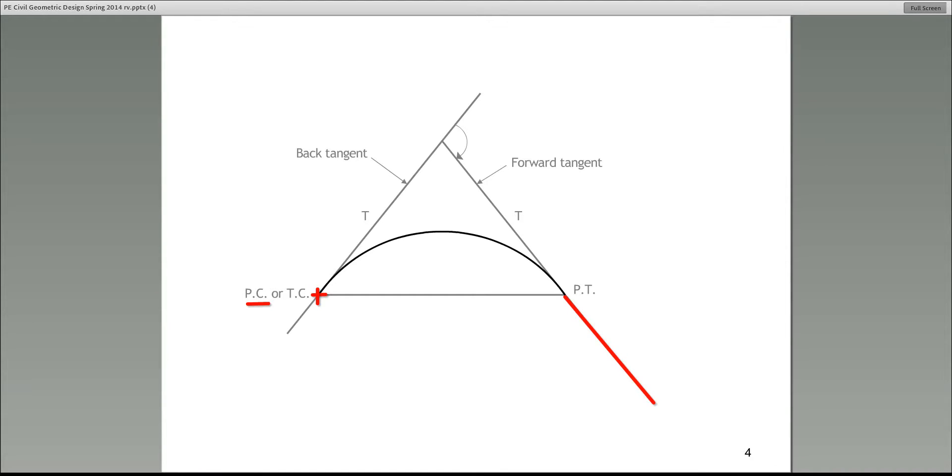Now, that same point is also referred to as TC. Who can tell me what TC stands for? TC stands for tangent to curve. So that is tangent to curve. And then there is a third way to represent that very same point. It is called BC. Who can tell me what BC would stand for? You are absolutely right. Beginning of curve. And the reason I say these three different terms is because interchangeably they do use on the test these three names. So you need to recognize what they are talking about.